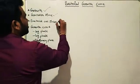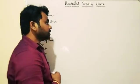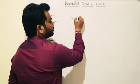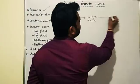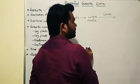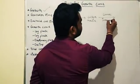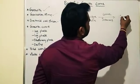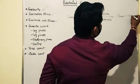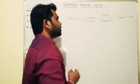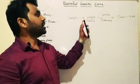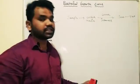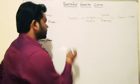Now let's see what is a bacterial growth curve. When you inoculate a sample on a suitable culture media and determine the counts at different time intervals, and if you plot them against time, the result is the growth curve.